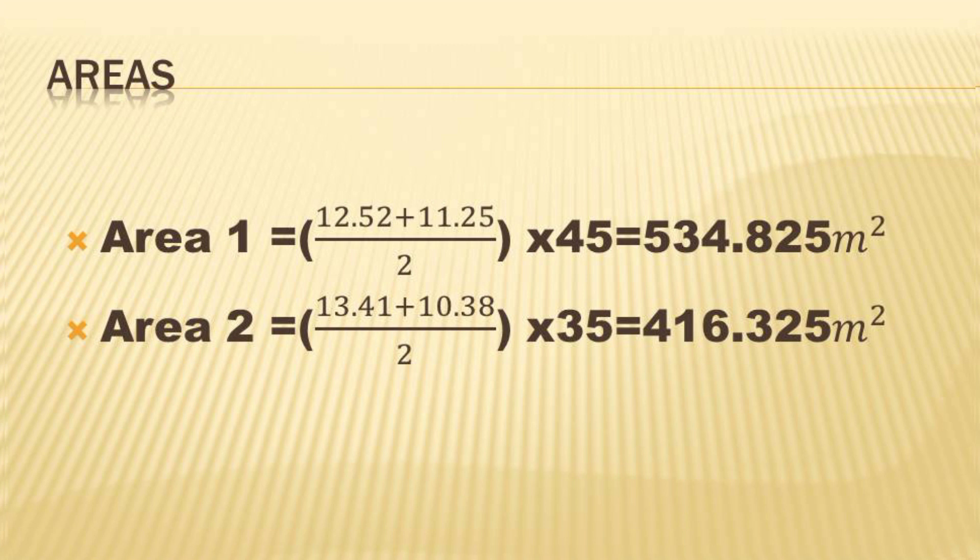We find the two areas using the trapezium area formula. For Area 1, our two sides will be 12.52 and 11.25, with height 45 meters. For Area 2, our sides will be 13.41 and 10.38, with height 35 meters. These values were obtained by subtracting the reduced levels from 60 meters.